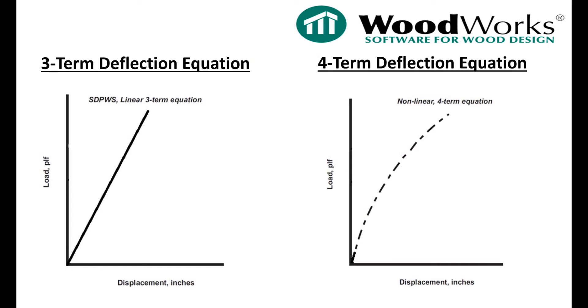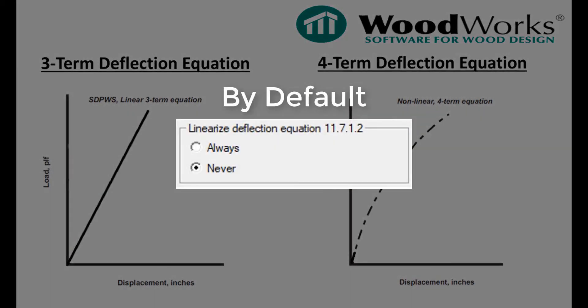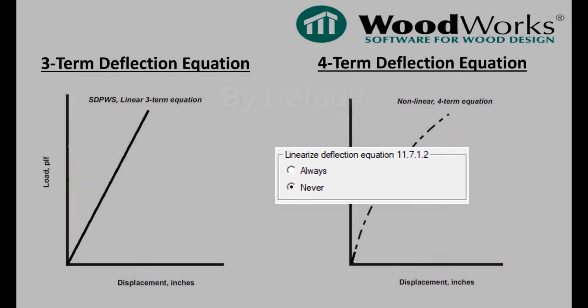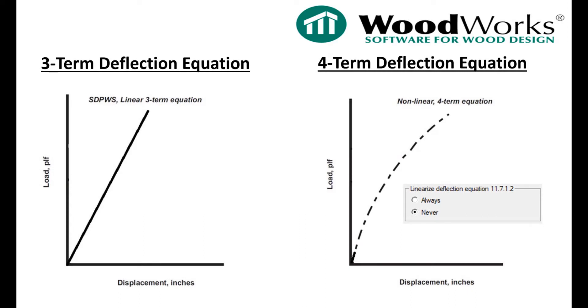These graphs represent the load displacement curve for both equations for a wood-sheathed shearwall. By default, the more accurate four-term deflection equation is selected. To use the three-term deflection equation, select Always linearize deflection equation.